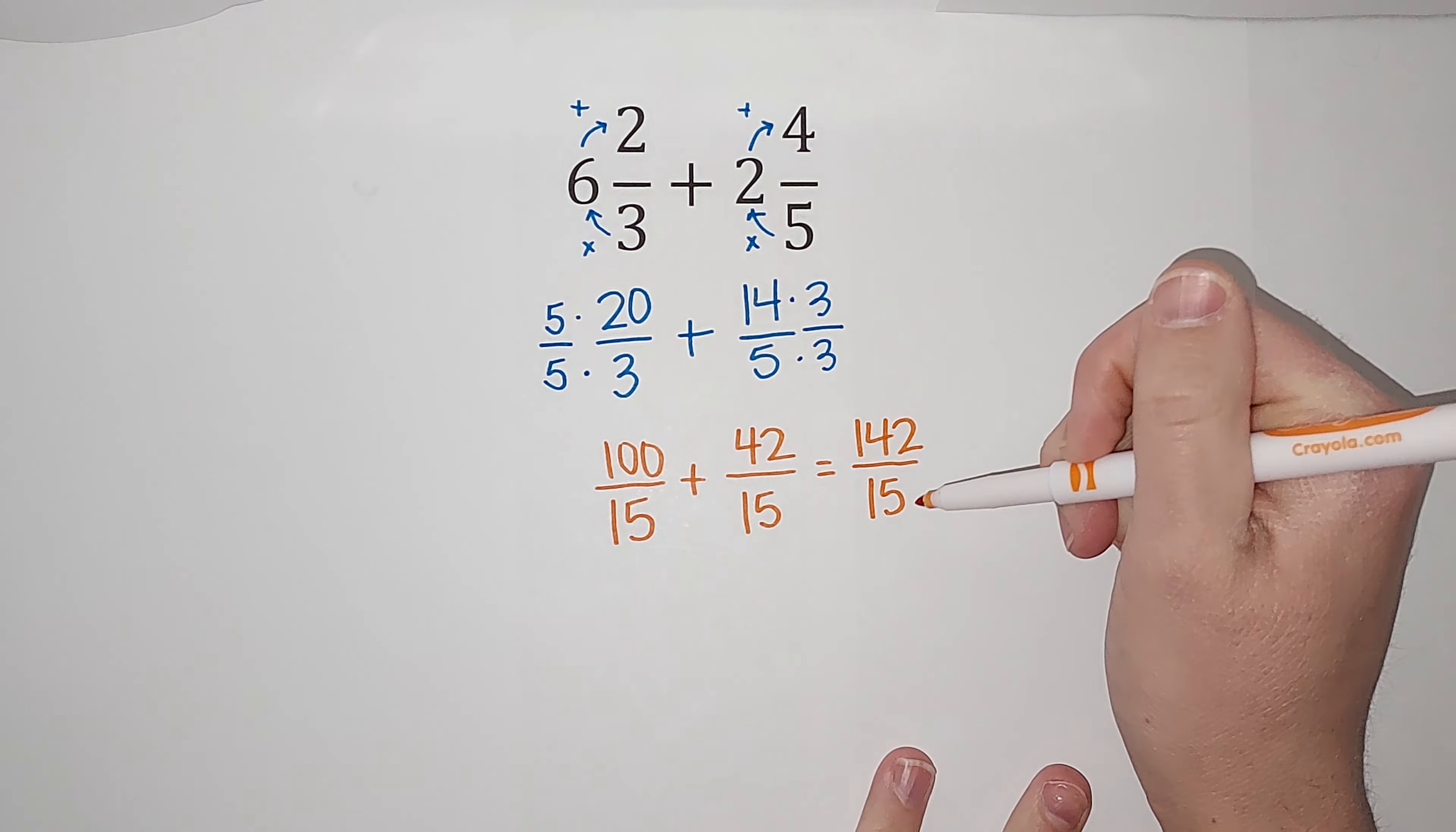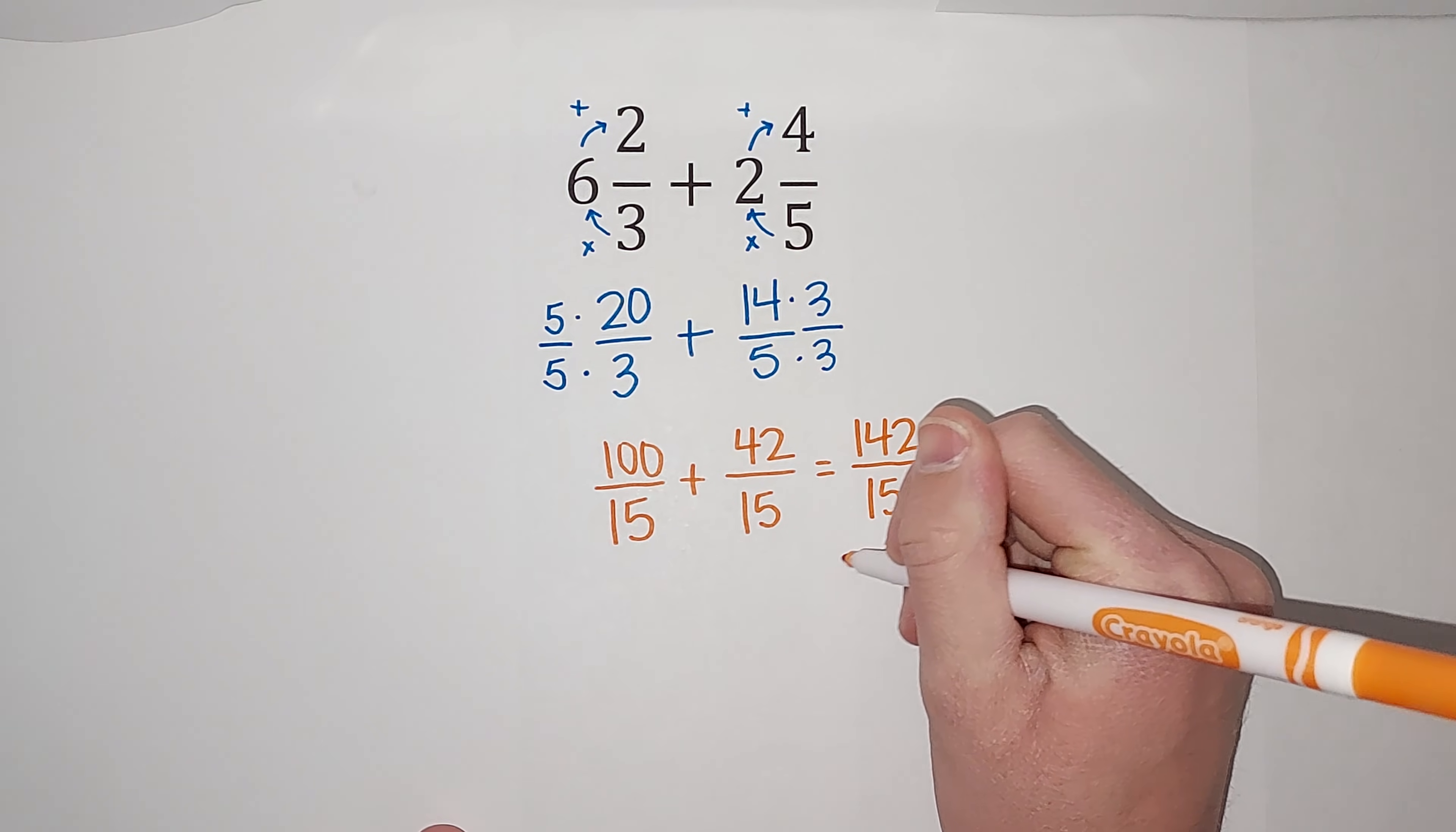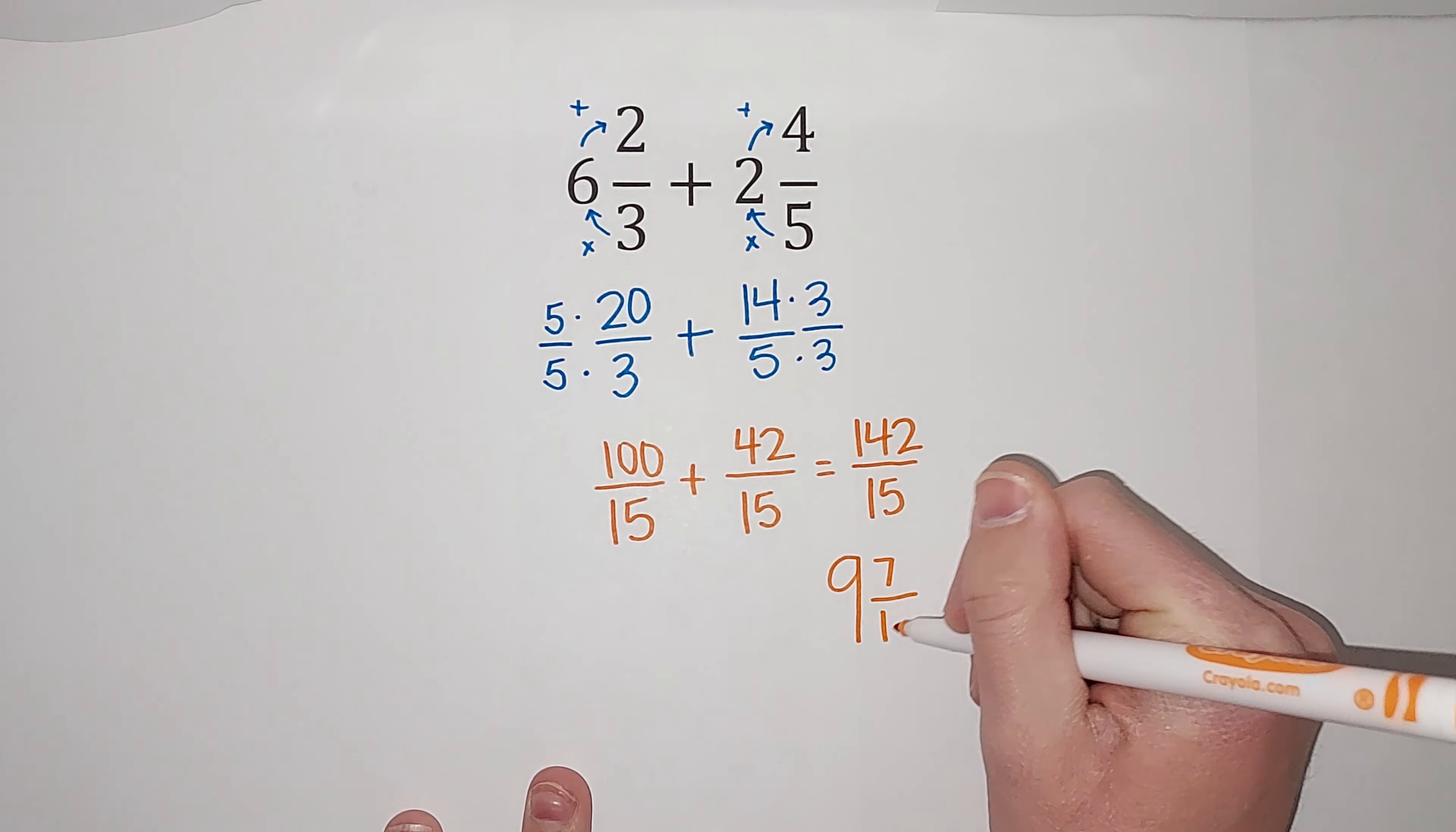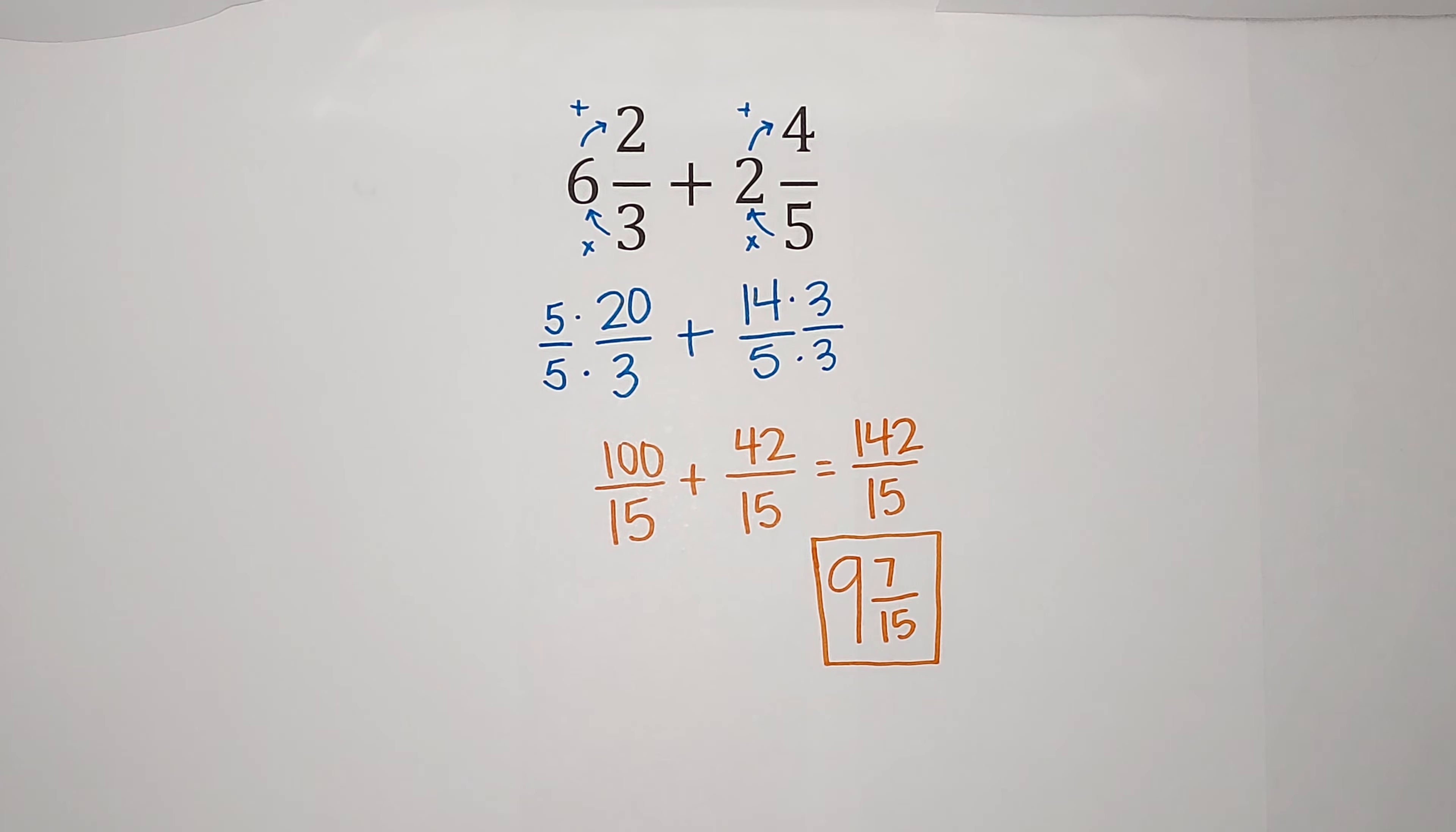how many times does 15 go into 142? Well, let me tell you, it goes in nine times. If you didn't know that off the top of your head, I didn't either. I did it beforehand. So it goes in nine times, which is 135. So you have seven left over and we still have a denominator of 15.